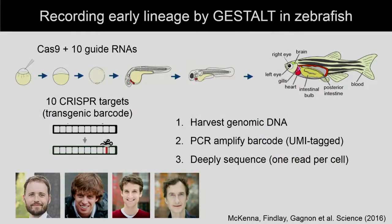This work was led by three very talented trainees: Aaron McKenna, Greg Finley, and Jamie Gagnon — Aaron and Greg in my lab, and Jamie in Alex Scheer's lab. As a proof of concept, we applied it together with Alex's group to zebrafish. We put a transgenic barcode into the genome of the fish, get fertilized zygotes that carry that barcode, then inject Cas9 and the 10 guide RNAs targeting that barcode at the single-cell stage. We allow the fish to develop and then harvest genomic DNA from whole organisms or from various organs and amplify the barcodes.